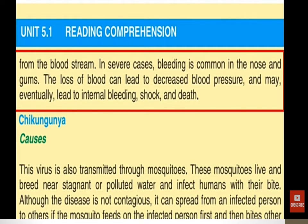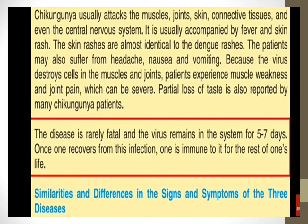Now the third disease is chikungunya, which is also spread by mosquito bite. This virus is transmitted through mosquitoes that live and breed near stagnant or polluted water, and infect humans with their bite. Although this disease is not contagious — meaning it does not spread through touch — it can spread from an infected person to others through mosquito bites.